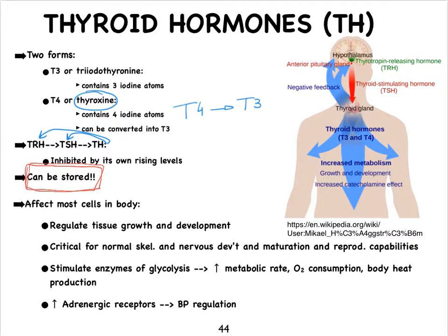Thyroid hormone and growth hormone both play very important roles in many parts of the body. Just like growth hormone impacts tissue growth, thyroid hormone does as well. Without thyroid hormone, we can't see proper development of especially our skeletal system, but also our nervous system. Even our reproductive capabilities are influenced by thyroid hormones.